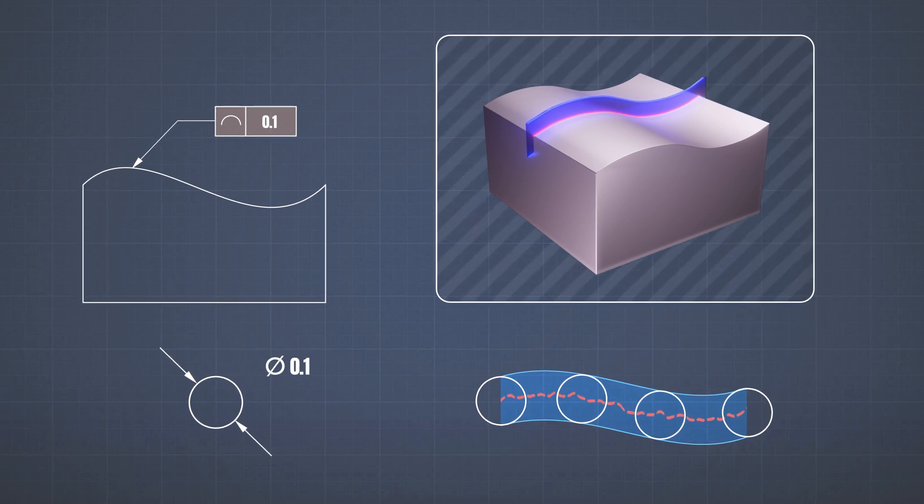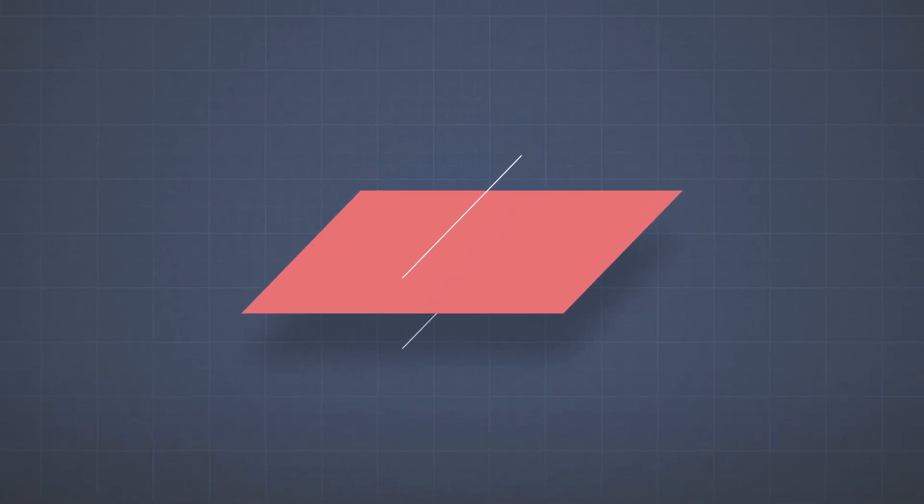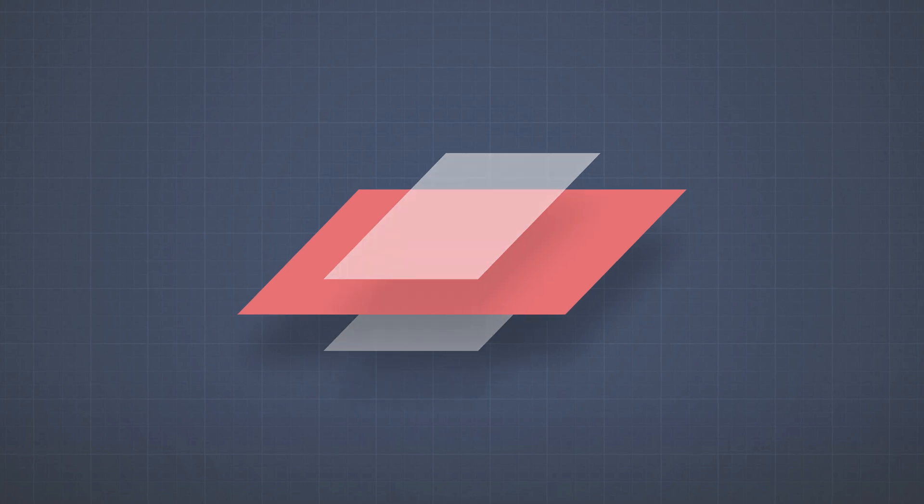So this was the profile of the line. The profile of the surface is just the same, but it's not only the tolerance between two ideal profiles, but it's between two surfaces.